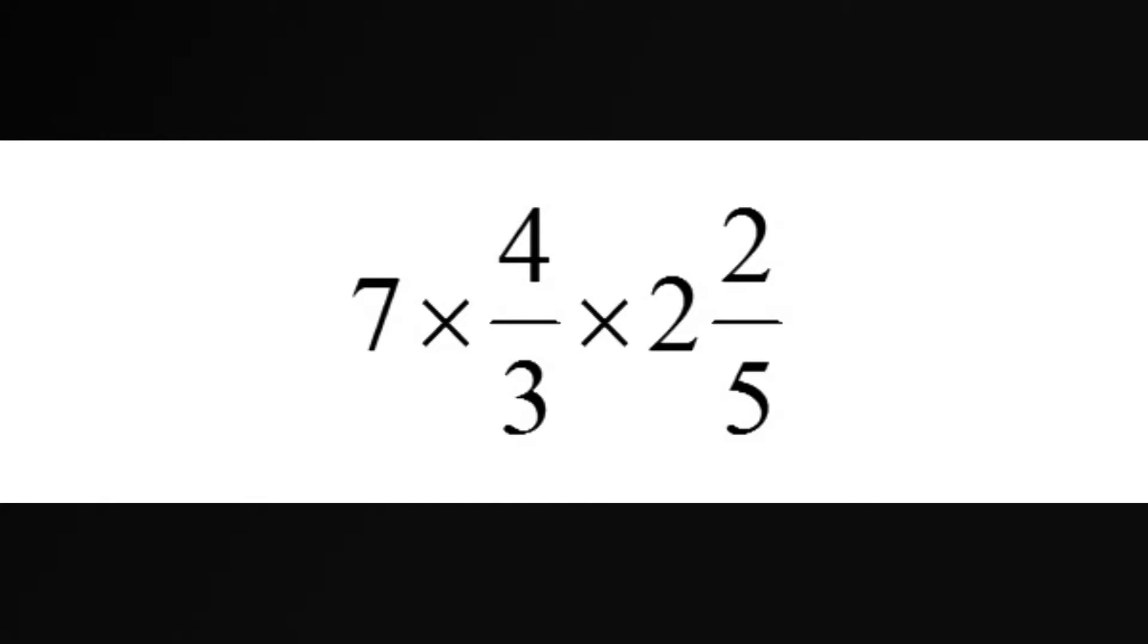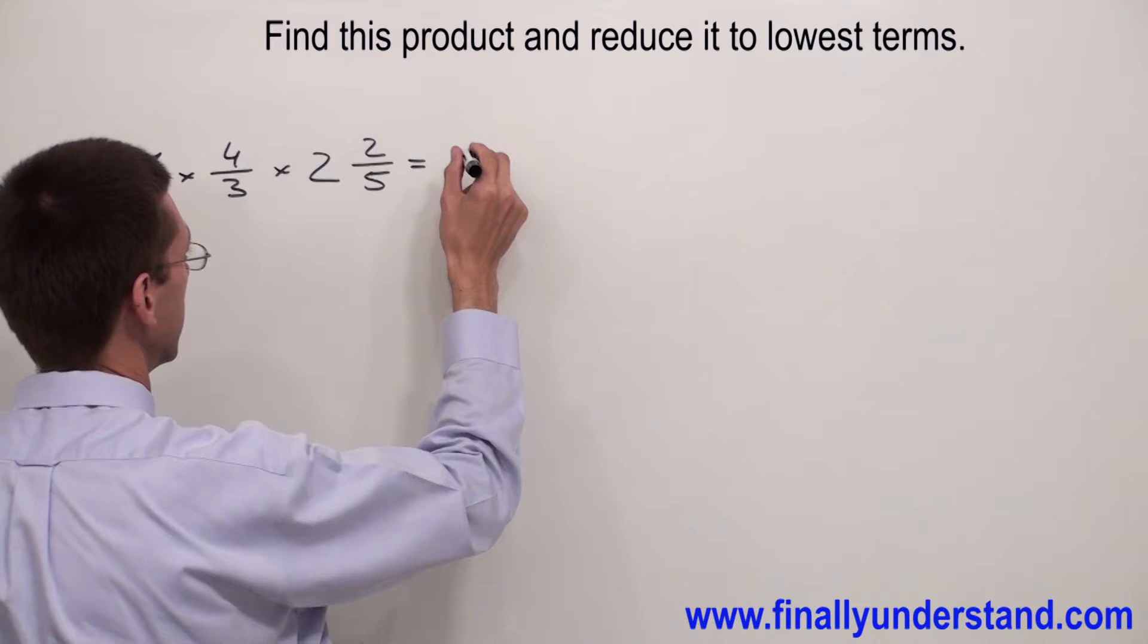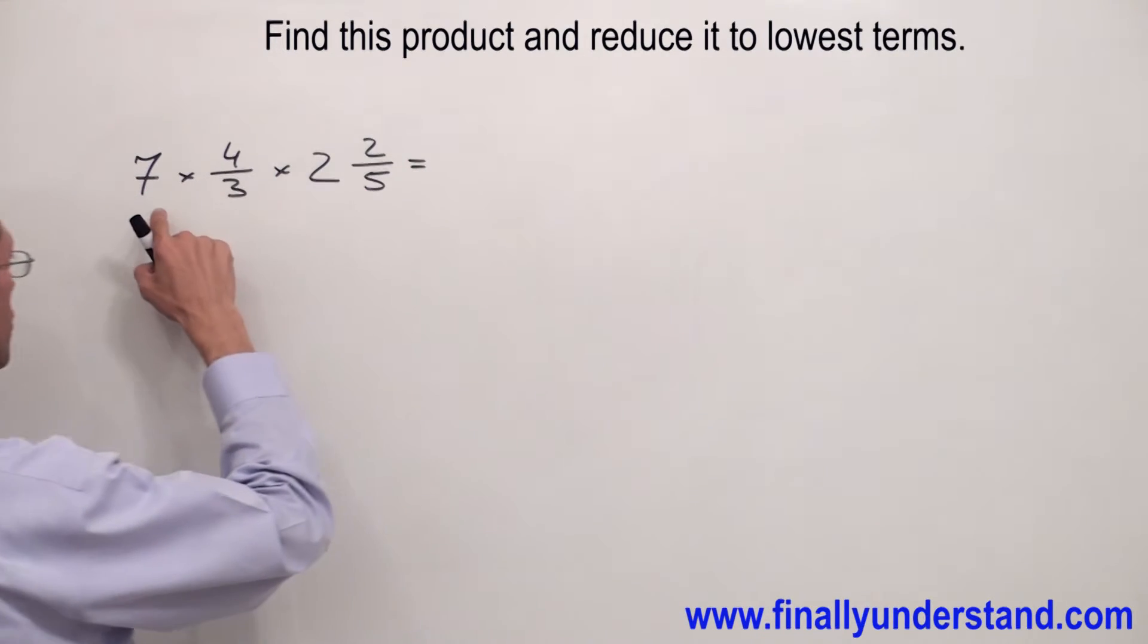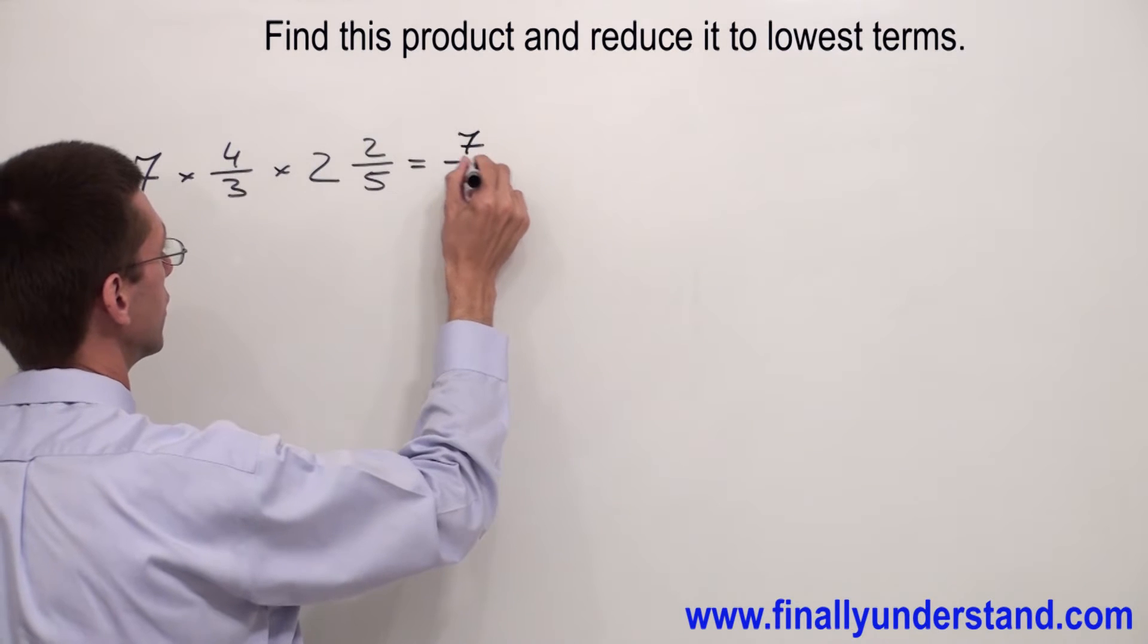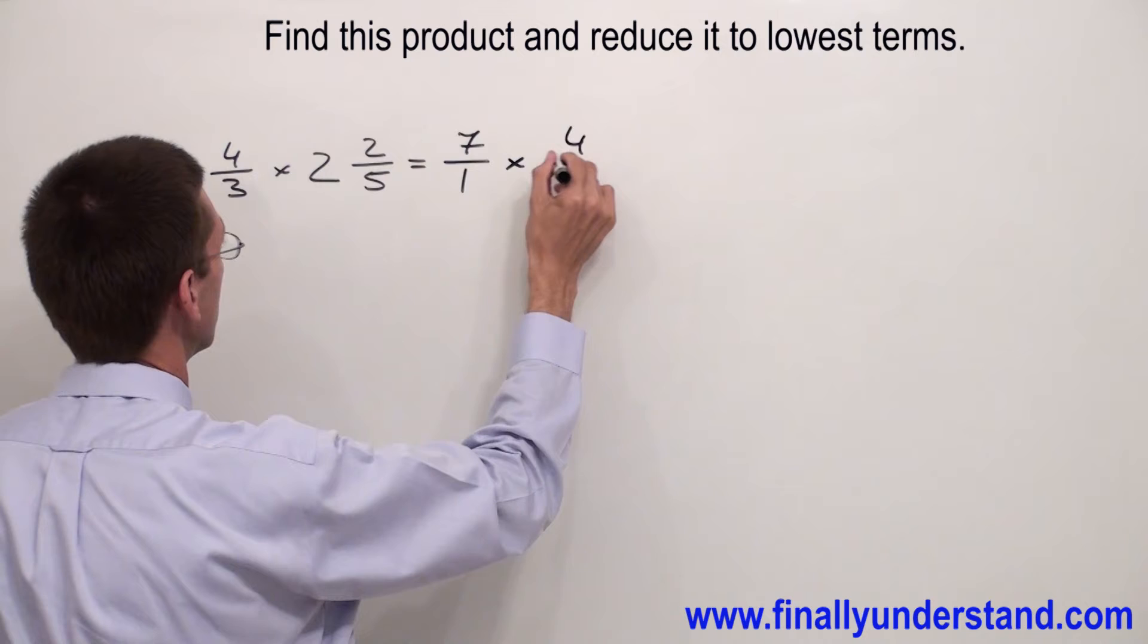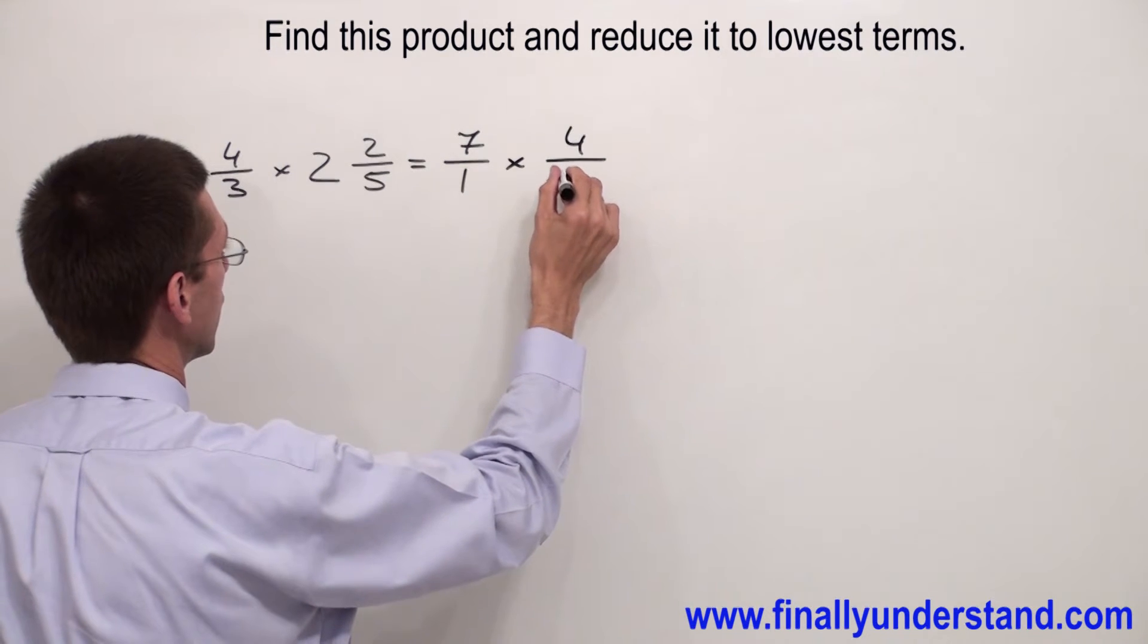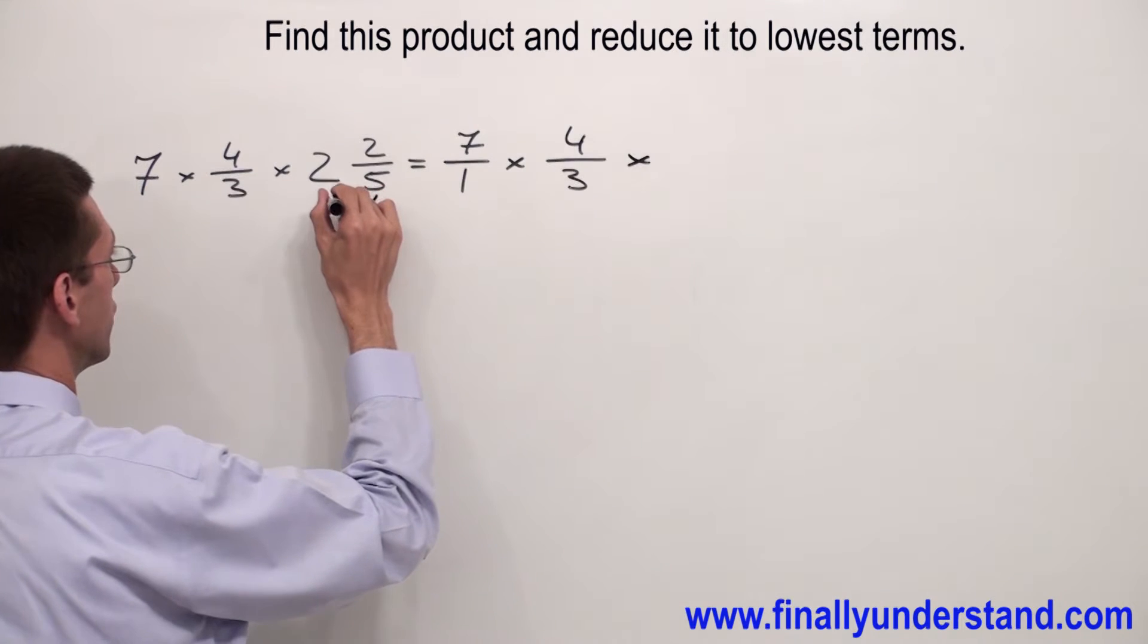The very first step which we have to do in this case, we have to convert 7 to improper fraction. Anytime you want to convert whole number to improper fraction, you have to write that number over one. In this case I'm going to have 7 over 1 times 4 over 3 times I have to convert mixed number.